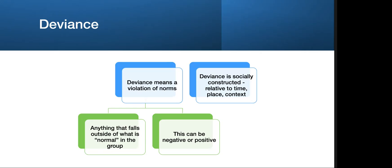Deviance can be negative or positive — it's really a matter of perspective and social connection at the time, place, and context. Slavery in the United States was not deviant until it became illegal. During a certain time and place it wasn't seen as negative, but now it is. Abraham Lincoln famously said that if he could have ended the war without ending slavery, he would have. Time and socialization change, so what is wrong and right is not as simple as yes or no — that's why it's not a simple dichotomy.